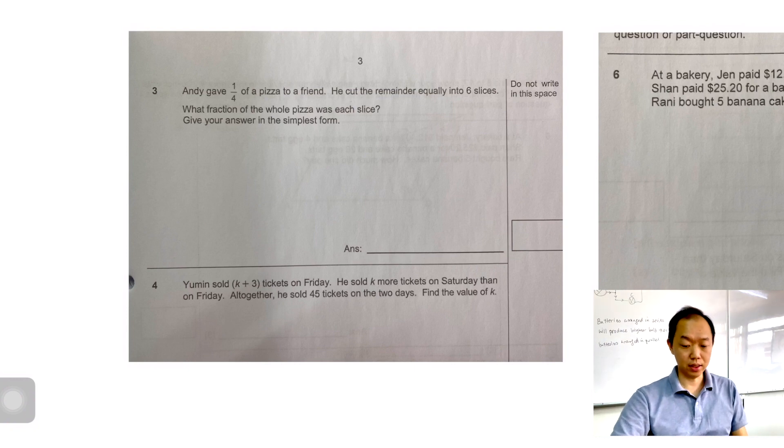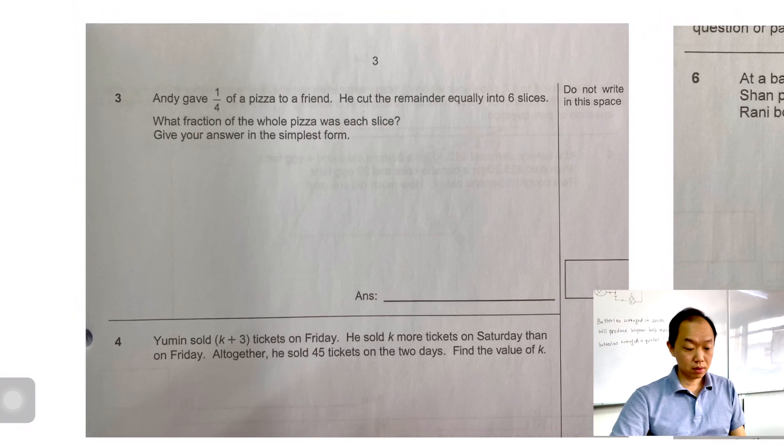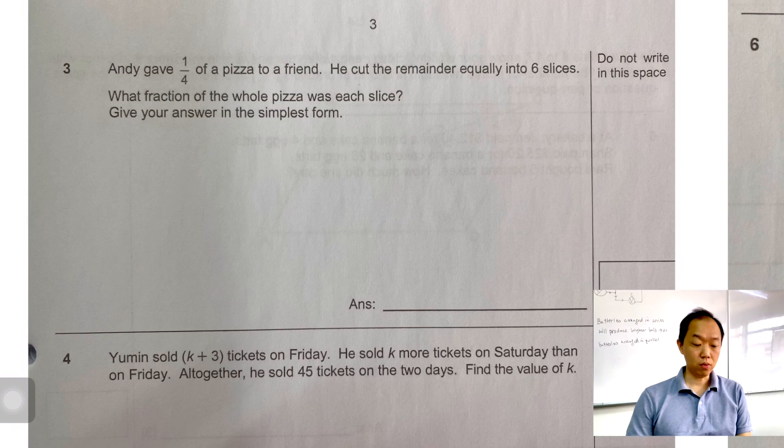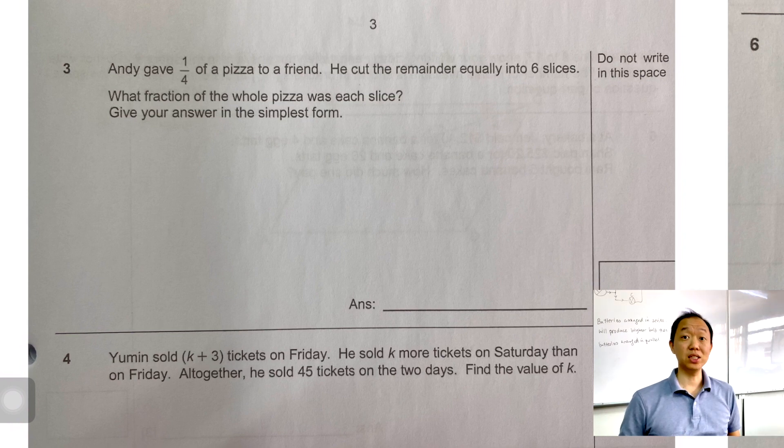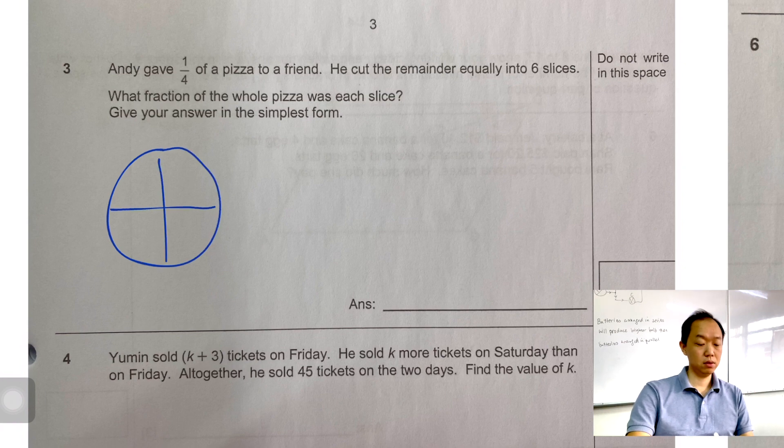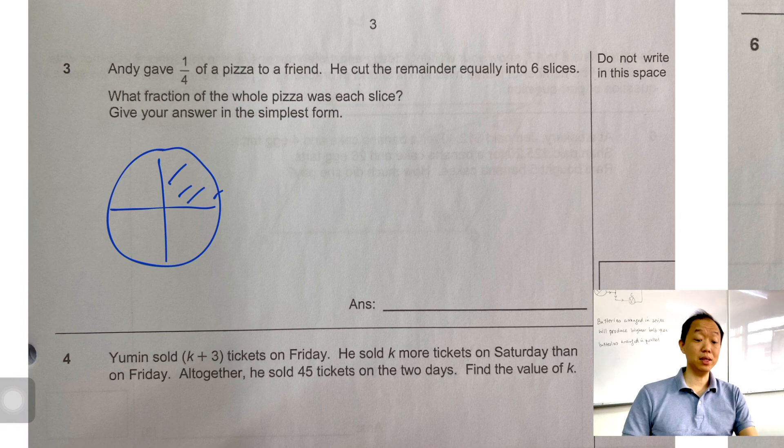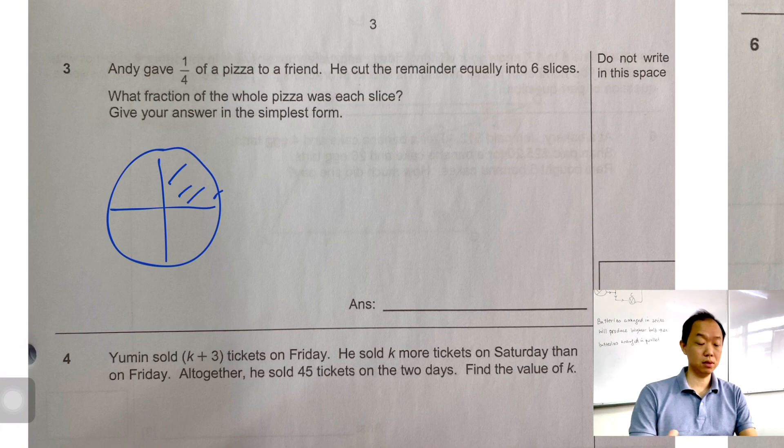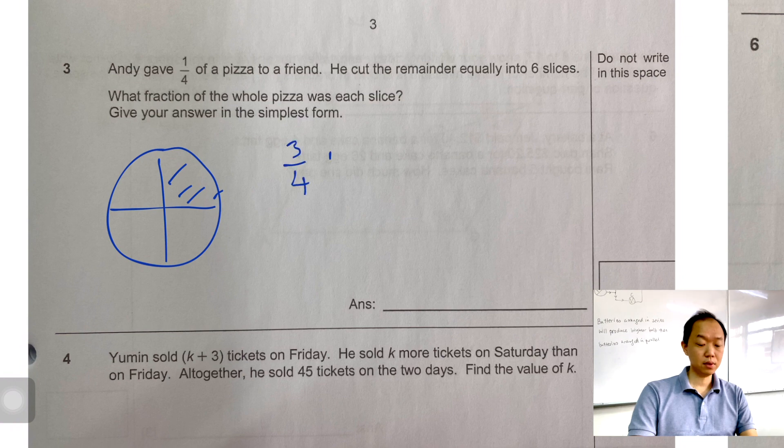The first question is about a pizza. First look, I know that this is a remainder concept. Why? Because it says he cut the remainder equally into six slices and what fraction of the whole pizza was each slice. So let's try and solve this. I only gave one quarter of a pizza to a friend so we can draw a pizza cut into four. One quarter given to a friend. He cut the remainder equally into six slices. So we have three quarters left. So what fraction of the whole pizza was each slice? What you can do is actually take three quarter divided by six.